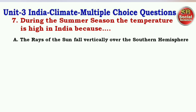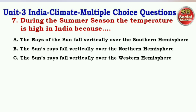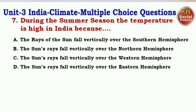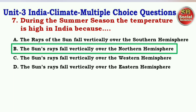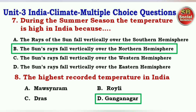Next question: During the summer season the temperature is high in India because — options are the rays of the sun fall vertically over the southern hemisphere, the sun's rays fall vertically over the northern hemisphere, the sun's rays fall vertically over the western hemisphere, the sun's rays fall vertically over the eastern hemisphere. The right answer is option B — the sun's rays fall vertically over the northern hemisphere.